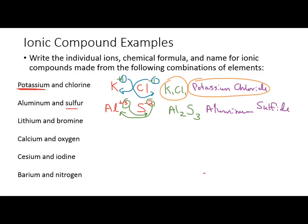For lithium and bromine: lithium (Li) is 1A → +1; bromine (Br) is 7A → −1. Criss-cross gives LiBr — one of each. The name is lithium bromide.